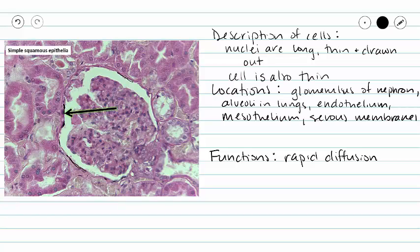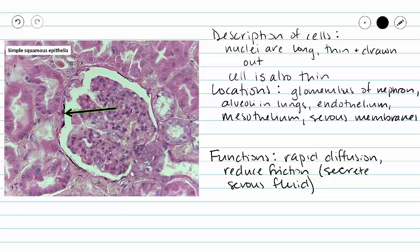We also see serous membranes as a location for simple squamous epithelium. So in addition to rapid diffusion, we can reduce friction. Every time you breathe in and breathe out, your thoracic cavity volume changes, but you don't feel that because your serous membranes secrete serous fluid to reduce friction. Secreting serous fluid is the immediate action that serves to reduce friction.